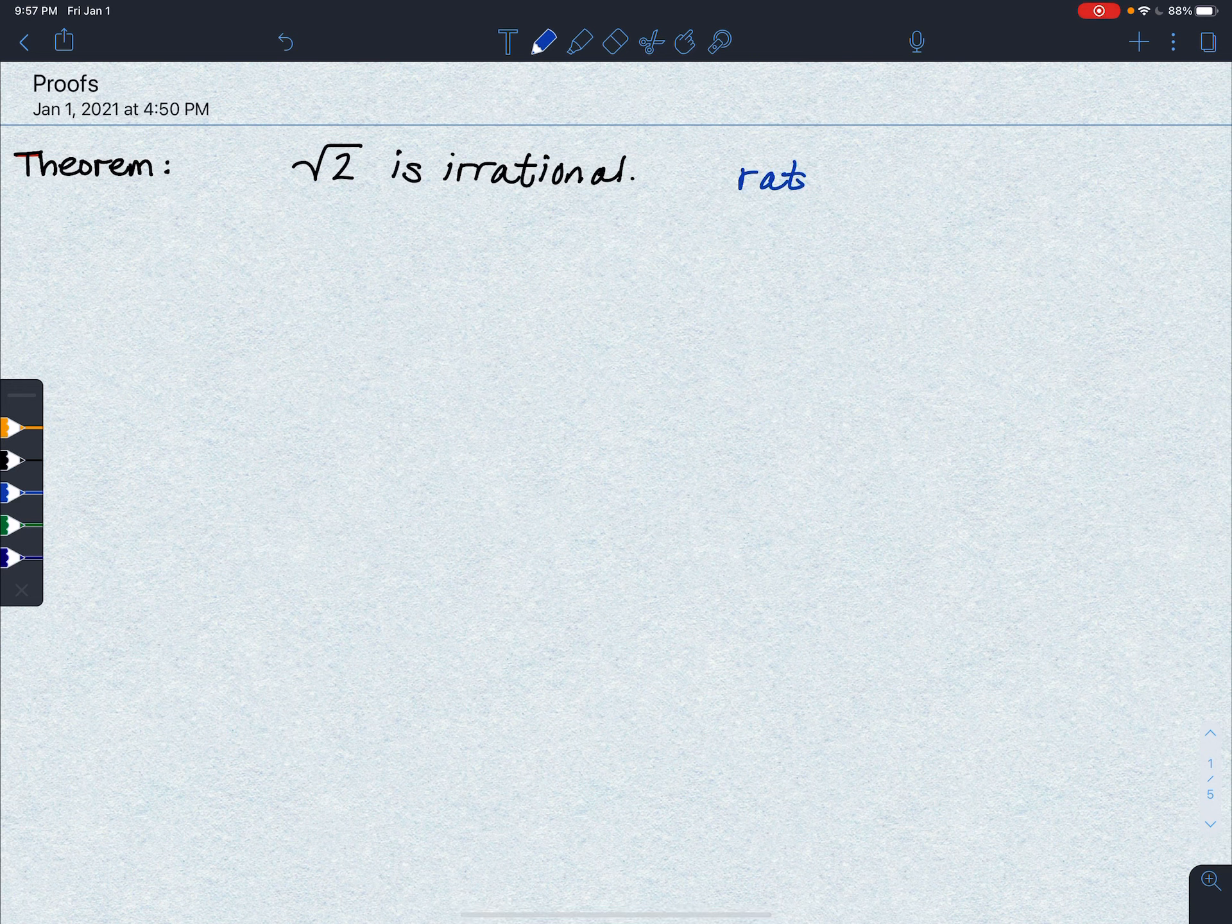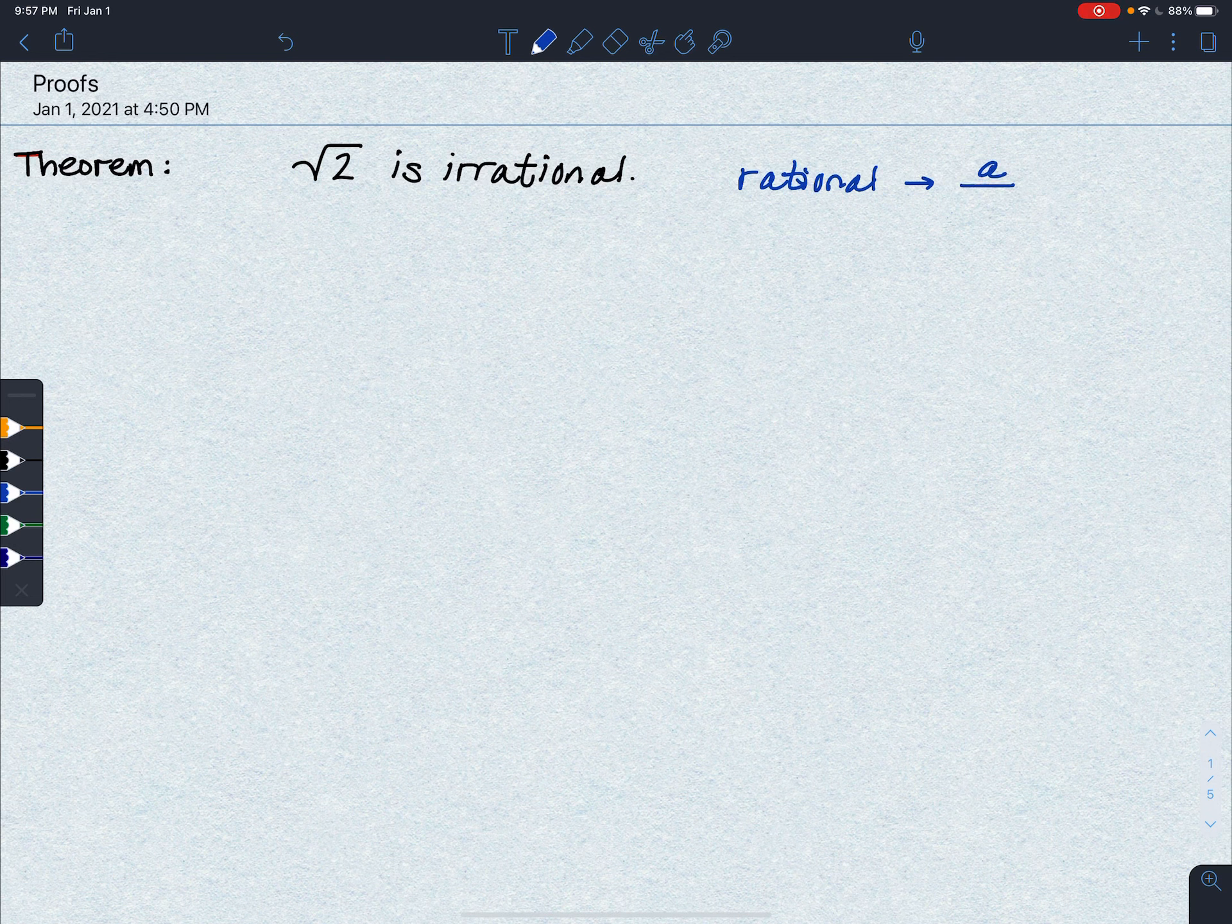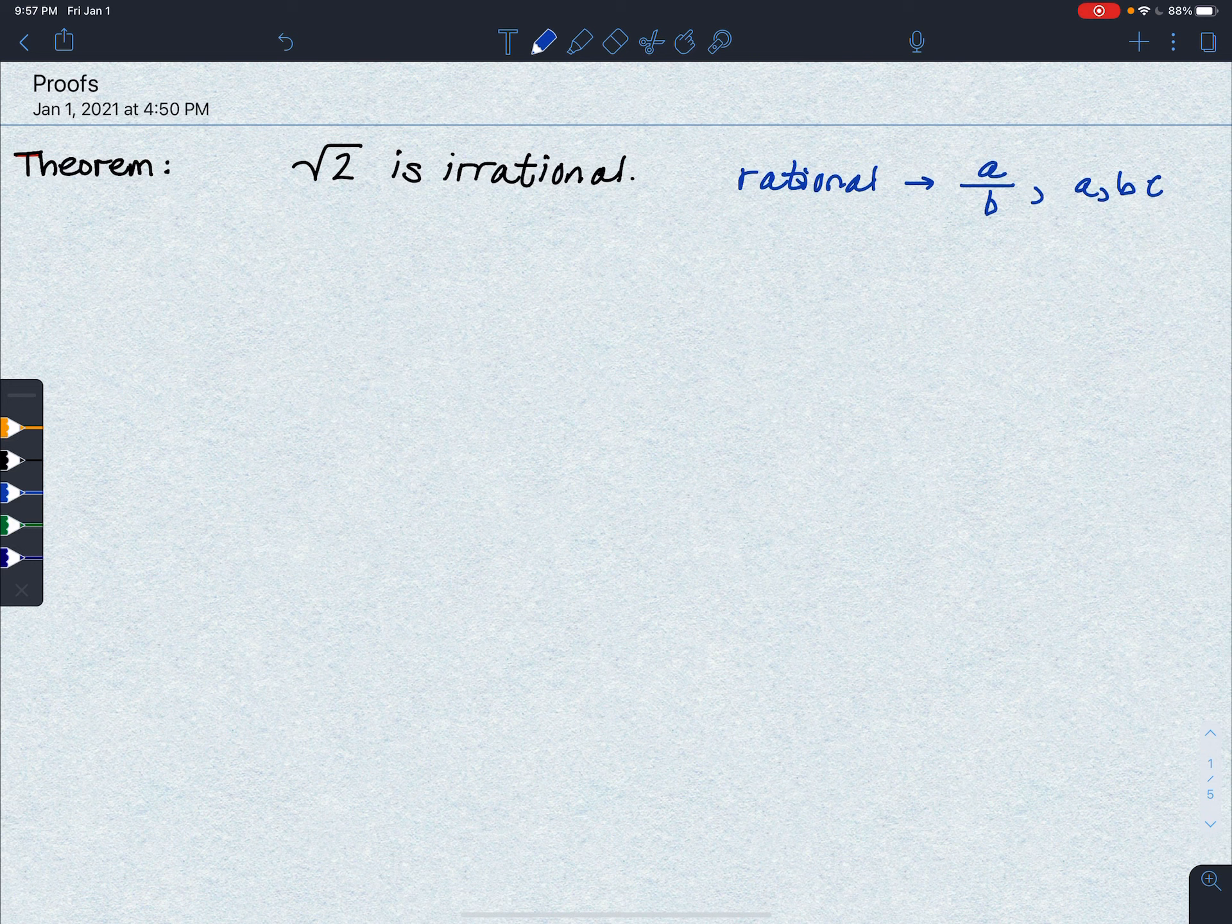So remember that rational means that the number can be expressed as a over b, where a and b are integers, so remember that Z is the set of all integers, and naturally, b is not equal to 0.